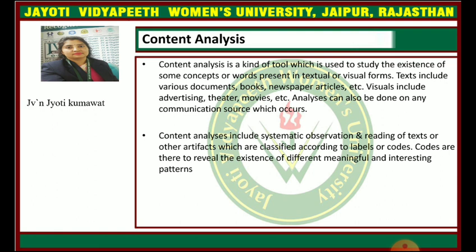Texts include various documents, books, newspaper, article, etc. Visuals include advertisement, theatre, movie, etc. So, analysis can be done on any communication source. This content analysis includes a systematic observation and reading of text or other artifacts which are classified according to labels or codes — we can say subunits or subtopics.